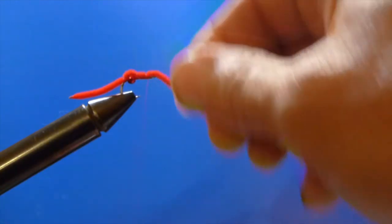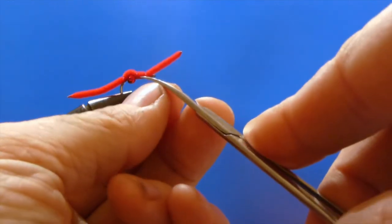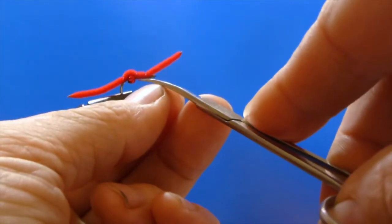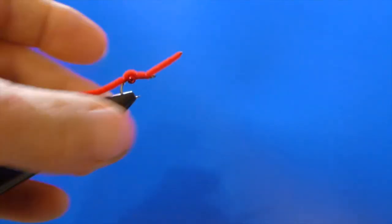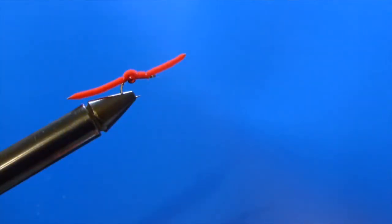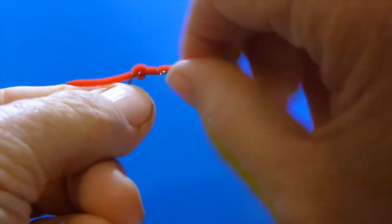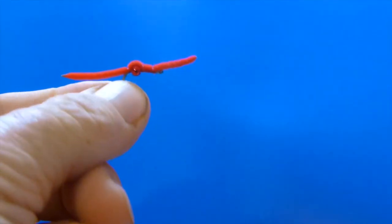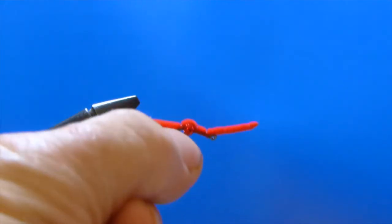Okay, and we can trim the thread. And now we've got a completed San Juan worm with a bead in it. The bead will help weight it down and get it down to the fish. I'll use this in a little swifter water where I want to help get that fly down to the kokanee.